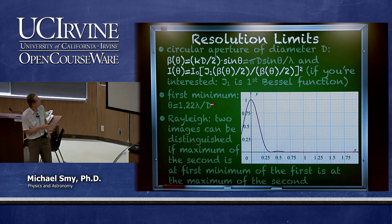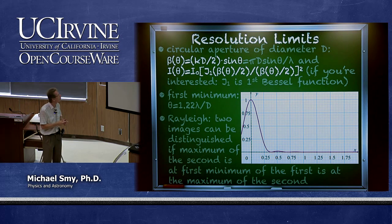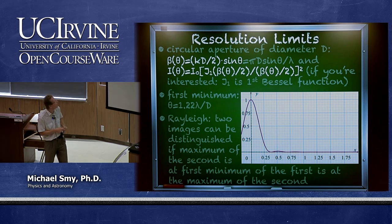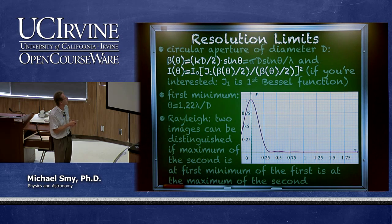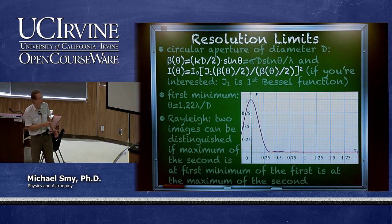The first minimum therefore doesn't have as clean a condition. Those minima occur at uneven multiples of lambda over d, and the very first one is 1.22 times lambda over d.